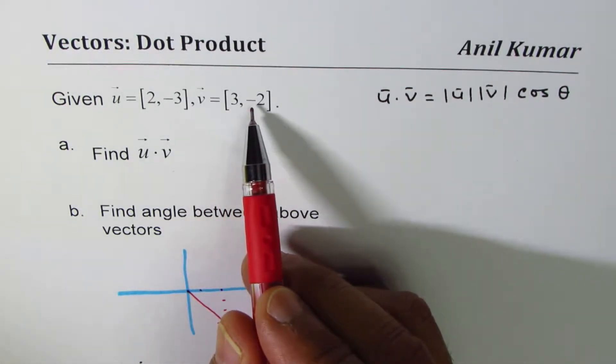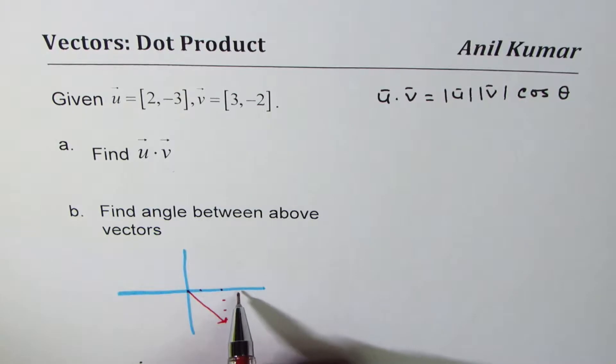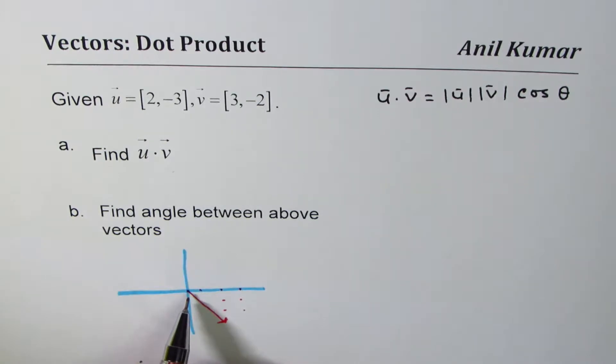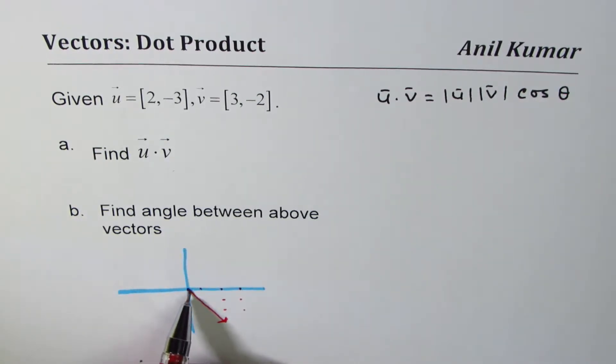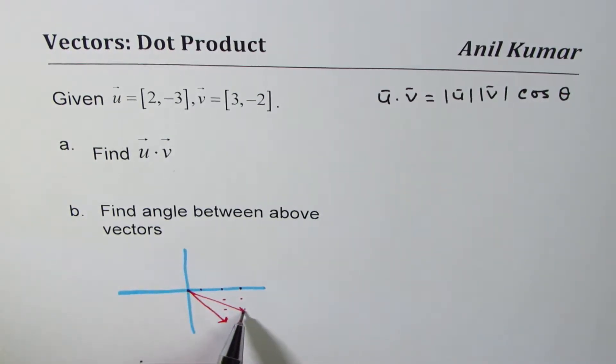v is [3, -2], that means you go three units right and two down to that position, so that is the vector v. And theta is the angle between these two.